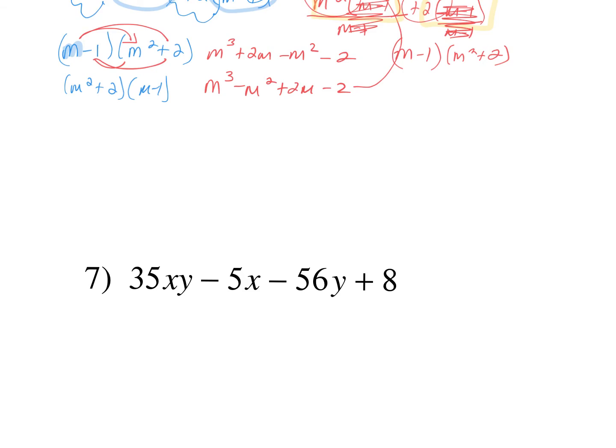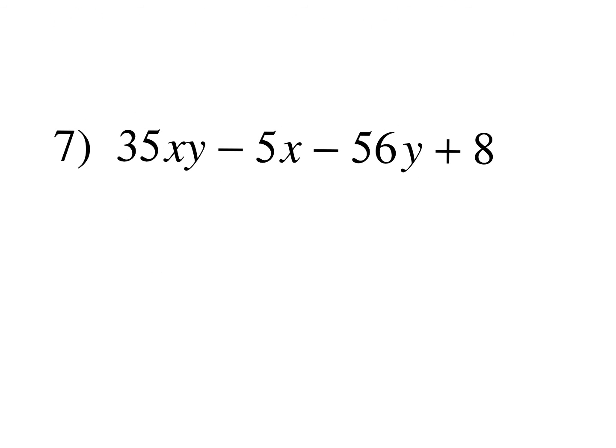When someone asked about rewriting in standard form: if you have the same variable with different exponents, yes, rewrite in standard form. But if you have different variables in the same problem — like here with x and y — don't worry about rearranging, just leave it as is. Is there a letter and/or number I can take out of 35xy, 5x, 56y, and 8? No, not from all four. So since there are four terms, we group.